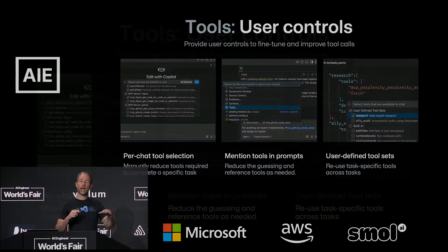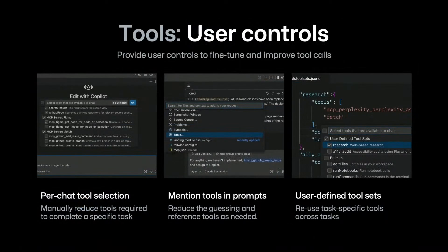Clients handle that somewhat — they give you extra controls. In VS Code, we added per-chat tool selection. There's a little tool picker where you can reduce down to just the tools you actually need in a moment, with keyboard accessibility, quick setup, and persistence for the session. We also allow mentioning of tools — like, why not just specify which tool to use and let the model fill in the right parameters? And just now in Insiders, we're shipping user-defined tool sets — a reusable concept where you define, say, 'these are all the tools I need for a front-end testing flow,' put them into a tool set, and reuse it.